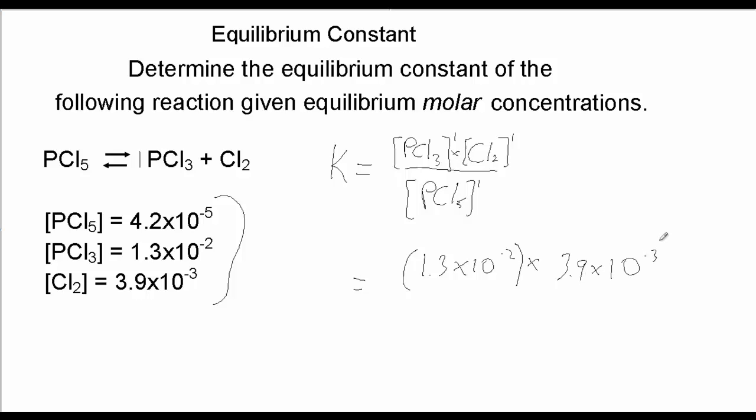And we divide that by the concentration of PCl5, which is 4.2 times 10 to the minus 5.